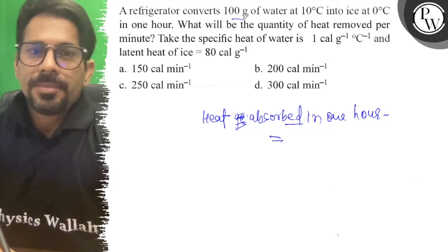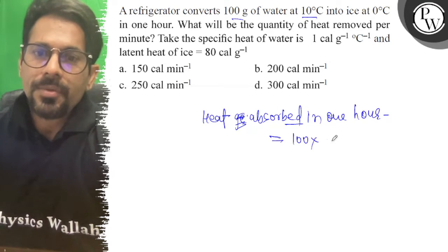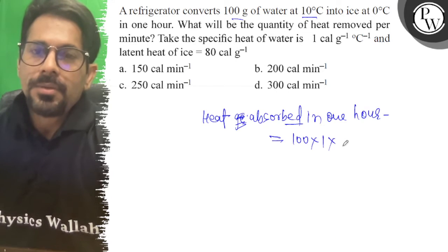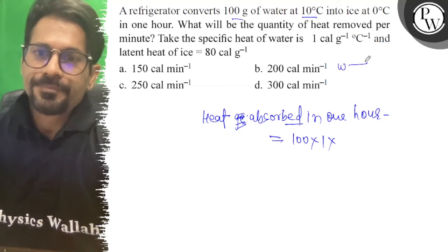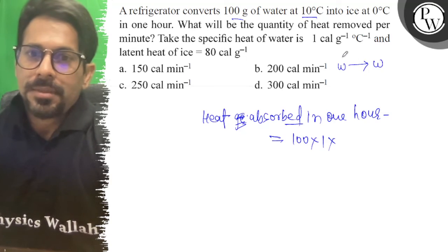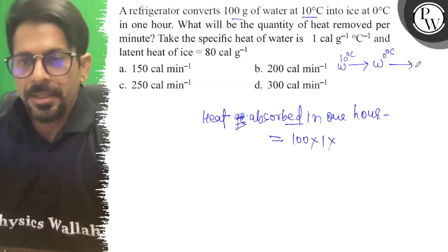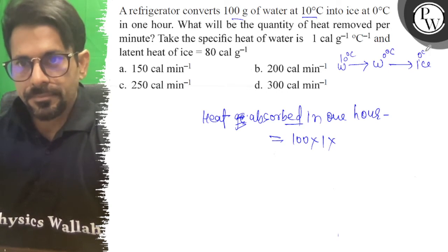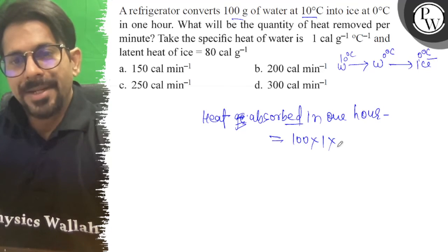Water is 100 gram of water at 10 degree celsius. So m into s1 into delta theta. Water is 10 degree celsius to 0 degree celsius. M is 100, delta theta is 10.